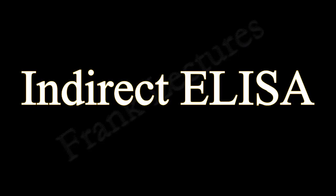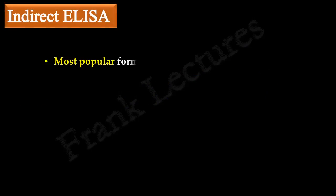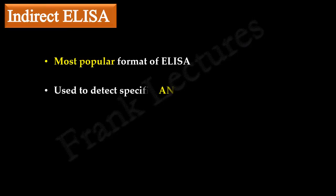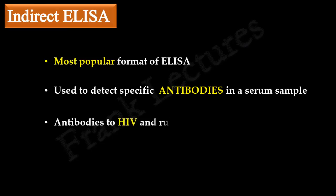Let's now study indirect ELISA. Indirect ELISA is the most popular. It is used for the detection of specific antibodies in a serum sample — for example, for antibodies to HIV, rubella virus, and to detect certain drugs in serum.